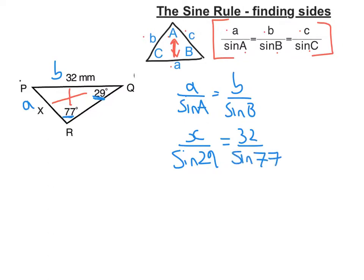Now, to solve any equation, I need to get X on its own. I'm going to multiply everything by sine 29 so that this goes on the top on the other side. What am I left with? X equals 32 sine 29 over sine 77.